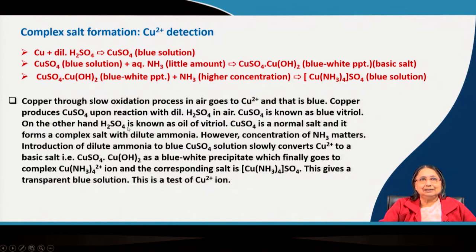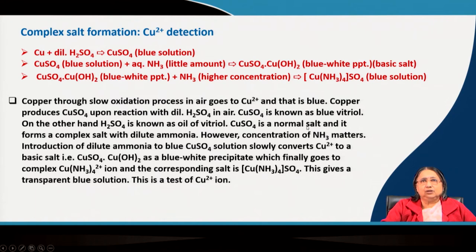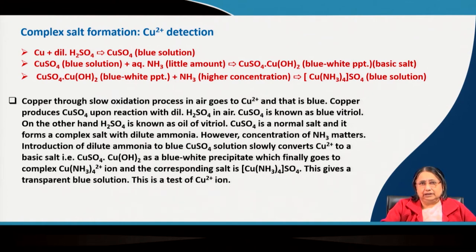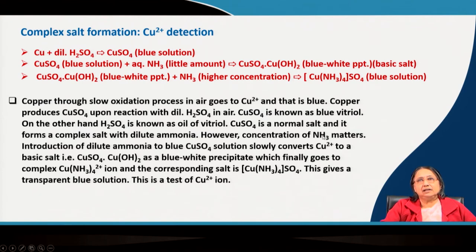If you put copper in dilute H₂SO₄ in air, it will slowly produce copper sulfate solution, which is blue in color and is known as blue vitriol. Sulfuric acid is called the oil of vitriol. Copper sulfate is a normal salt — it is neither an acid salt nor a basic salt — and it forms a complex salt with dilute ammonia. If you take copper sulfate and add ammonia solution, different reactions occur depending on the concentration of ammonia.